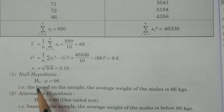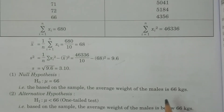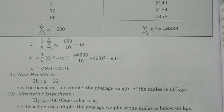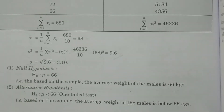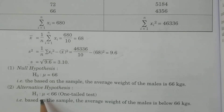Null hypothesis H₀: mu = 66. The average weight of the males is 66 kilos. Alternative hypothesis H₁: mu < 66 — the average weights of the males is below 66 kilos. Since H₁ has mu less than 66, this is a one-tailed test.